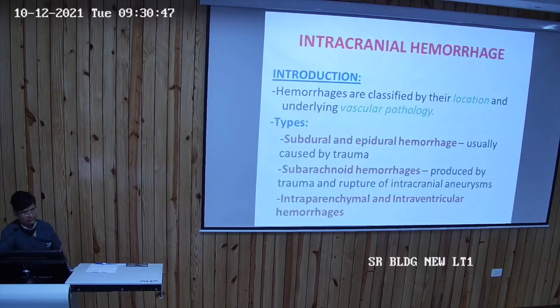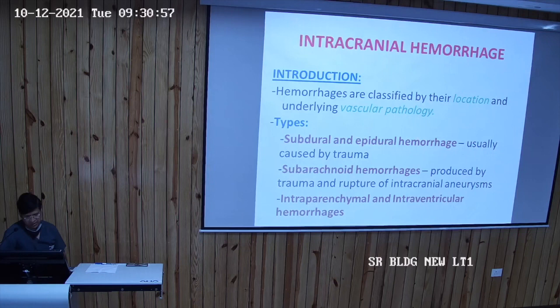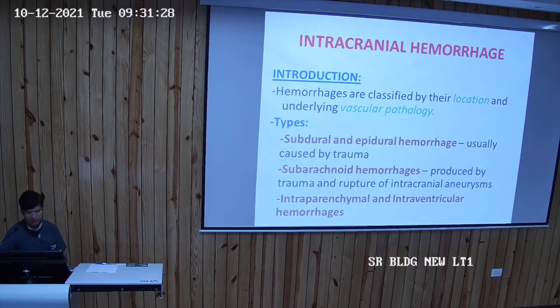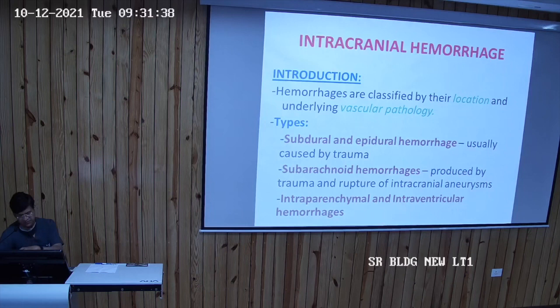Intracranial hemorrhage means there is a bleed within the brain, and hemorrhages are classified by their location and underlying vascular pathology. Types include: subdural hemorrhage (below the dura), epidural hemorrhage (outside the dura), subarachnoid hemorrhage (below the arachnoid — produced by trauma or rupture of an intracranial aneurysm), intraparenchymal hemorrhage (within the brain parenchyma), and intraventricular hemorrhage (within the ventricles). Subdural and epidural hemorrhages are usually caused by trauma.